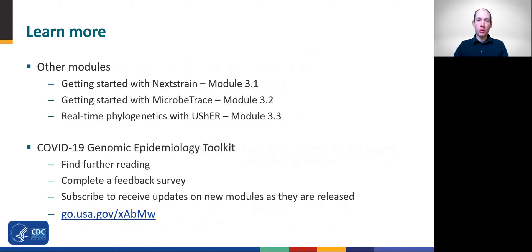This concludes Module 3.5. Part 3 of this toolkit focuses on useful tools and skills to apply genomic data and, in particular, to integrate that data with epidemiologic or clinical data. The three modules listed here include details for analyzing sequence data that can be downloaded from public repositories highlighted in the current module. Please visit the COVID-19 Genomic Epidemiology Toolkit page where you can find further reading on this topic, as well as a short survey to provide feedback about this module. On the toolkit page, you can also subscribe to our mailing list and receive announcements as new modules and materials are released. Thank you.